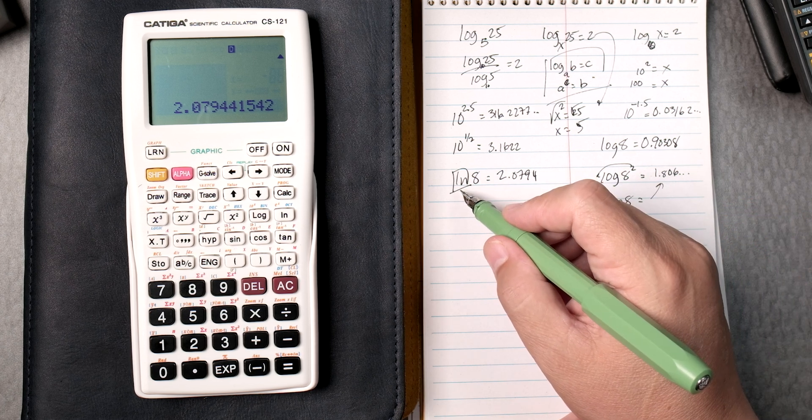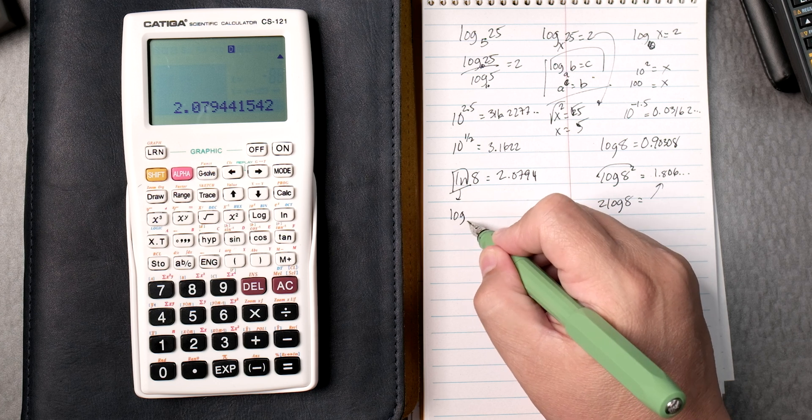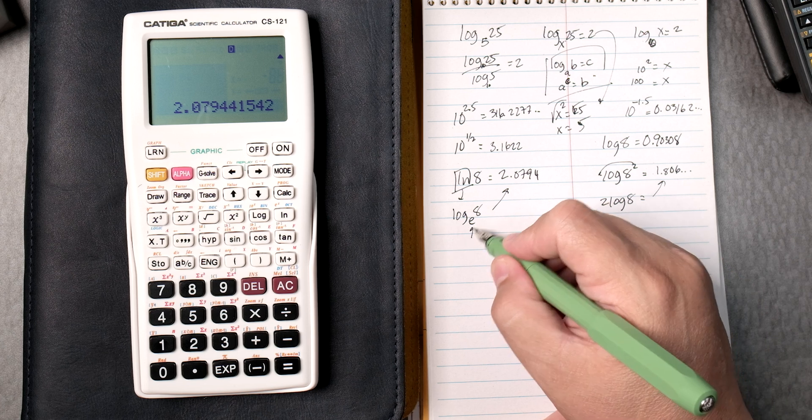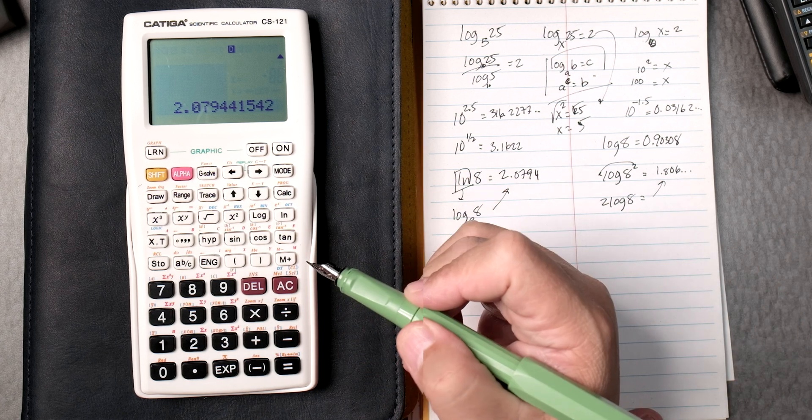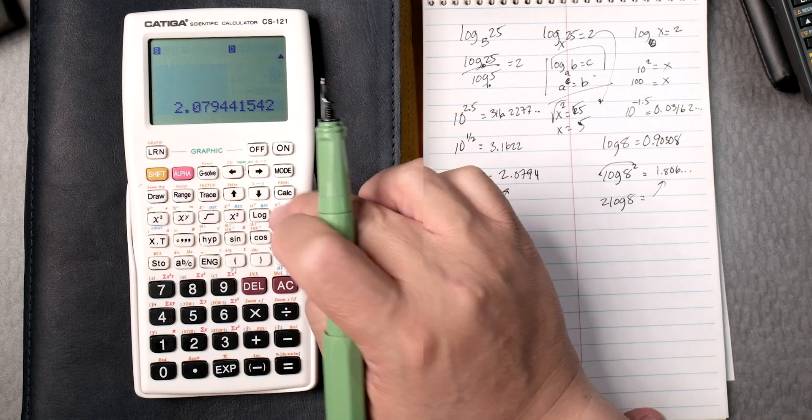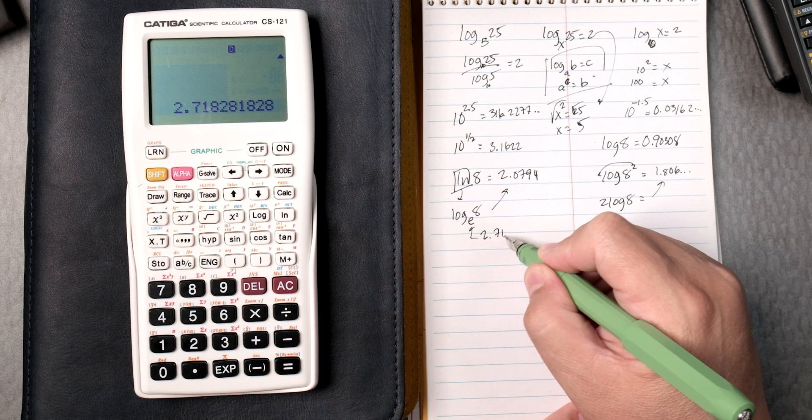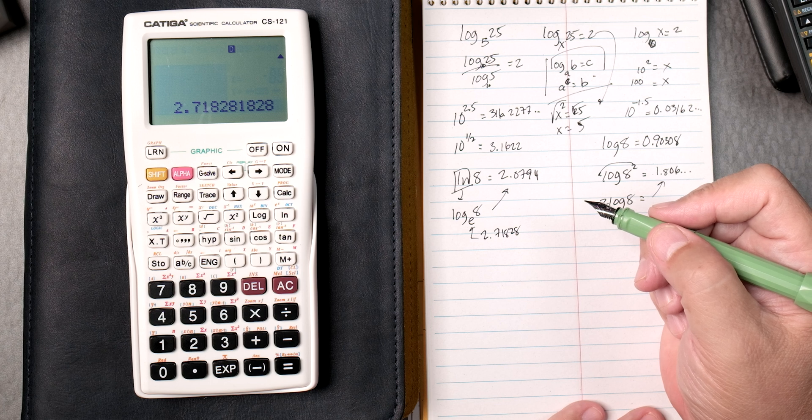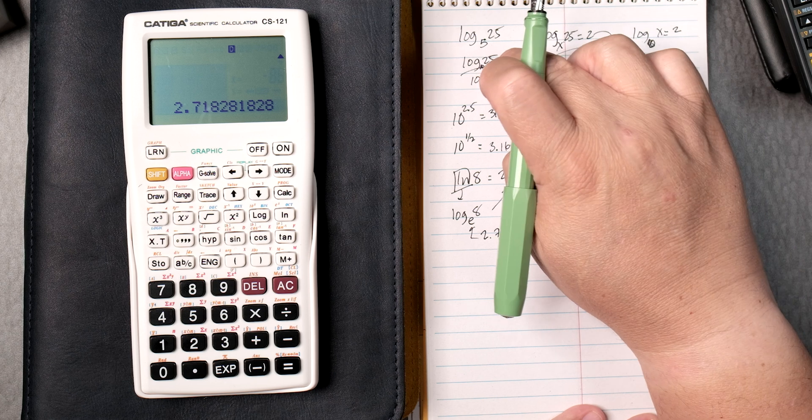Natural log can be written as the log of base e of 8, which is the same answer. This e is right here, right above natural log, e to the x. So if you press shift log, which is e to the 1, it gives you 2.71828. That's a lot of numbers.